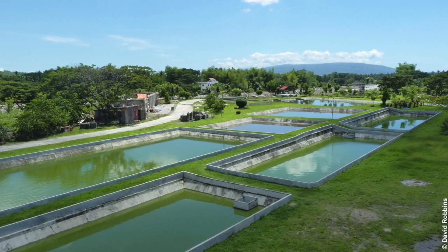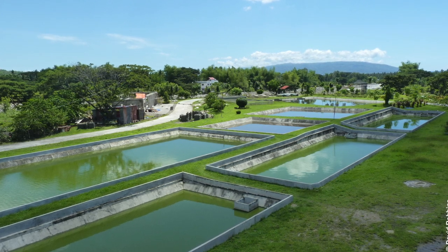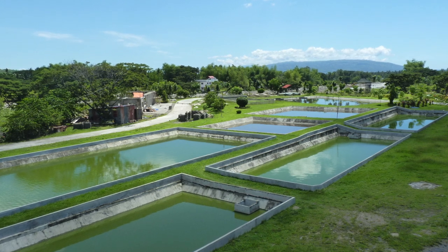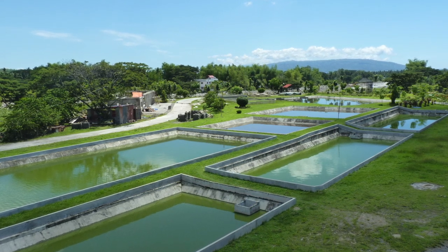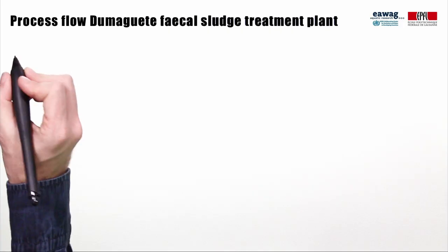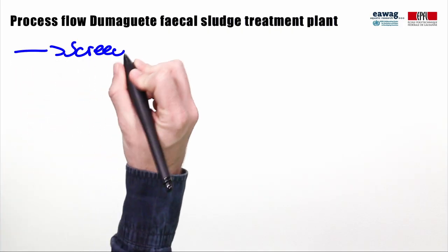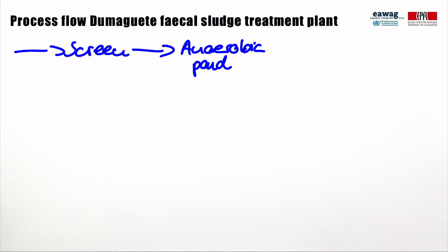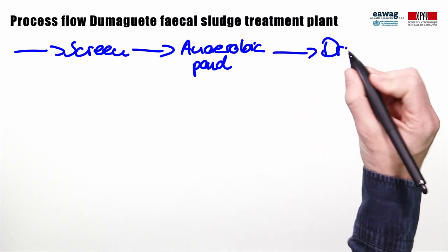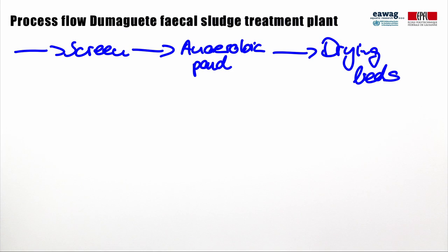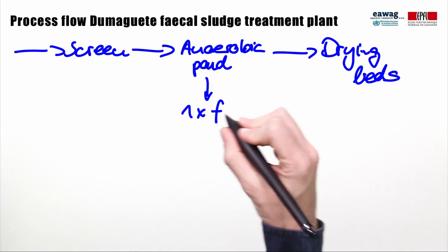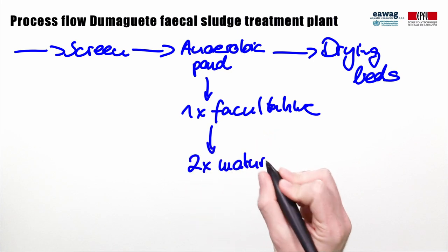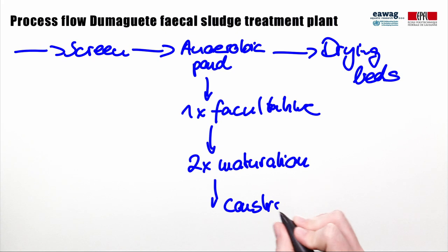This picture shows the fecal sludge treatment plant in Demagete, the Philippines. Demagete has a treatment capacity of 80 cubic meters of fecal sludge, which is mainly collected from septic tanks by vacuum trucks. Following a screen, solids and liquids are separated in one anaerobic waste stabilization pond. Solids are then dewatered on drying beds. The treatment chain for the liquid effluent includes one facultative pond, two maturation ponds in series, and then a constructed wetland prior to discharge.